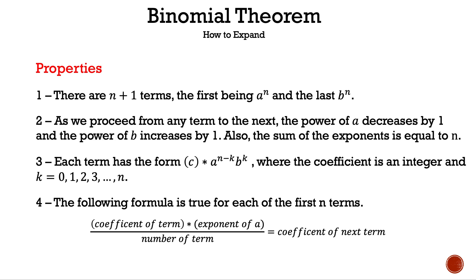The third property is each term has the form c times a to the n minus k, b to the k, where the coefficient is an integer and k is equal to 0, 1, 2, 3, and so forth until n. The fourth property is the following formula is true for each of the first n terms: coefficient of term times exponent of a divided by number of term equals the coefficient of the next term. And those are the properties of the binomial theorem.